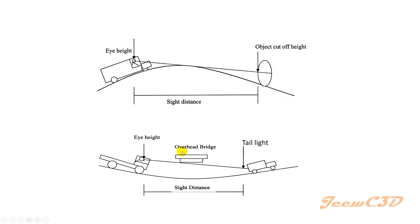In a night-time situation, the driver sees the tail light of the preceding vehicle. The height of the tail light affects sight distance — if it is at a higher position, the driver sees it earlier, but if it is at a lower position, it may not be visible at all. These are the key factors affecting sight distance.